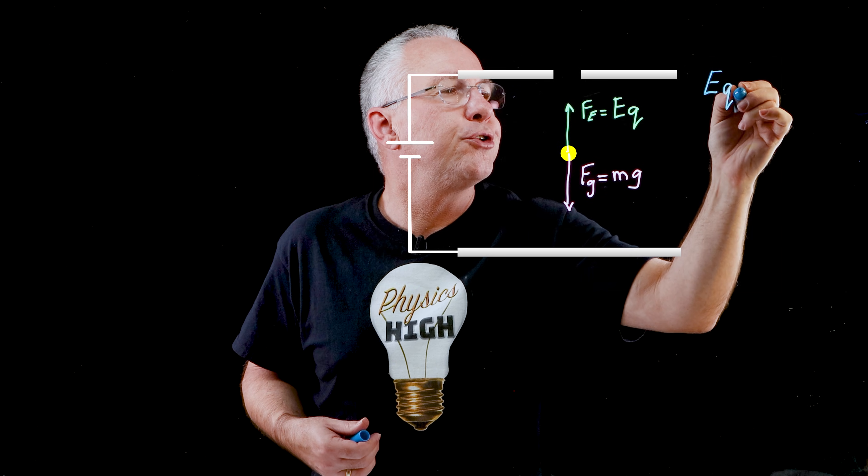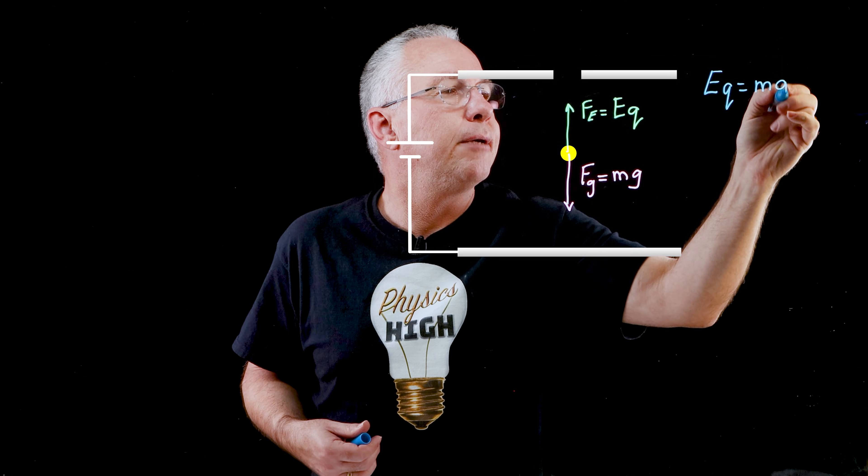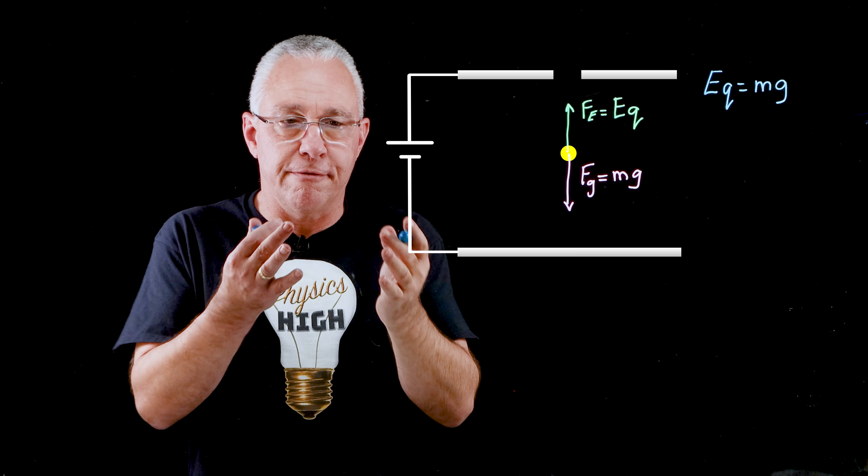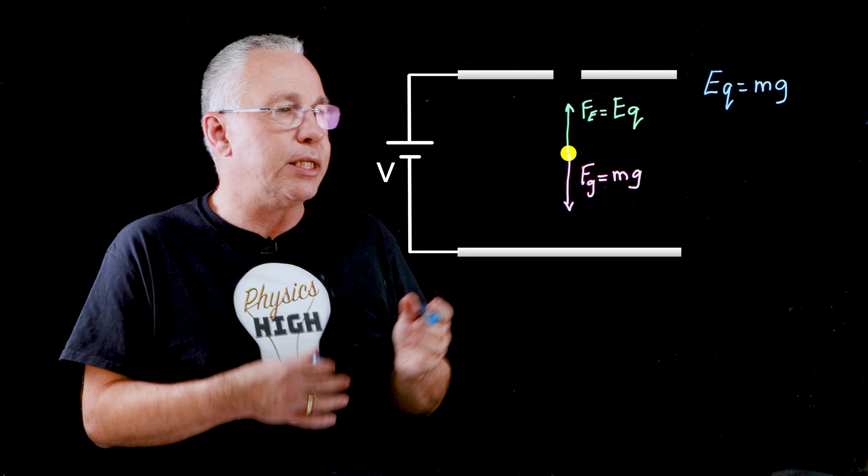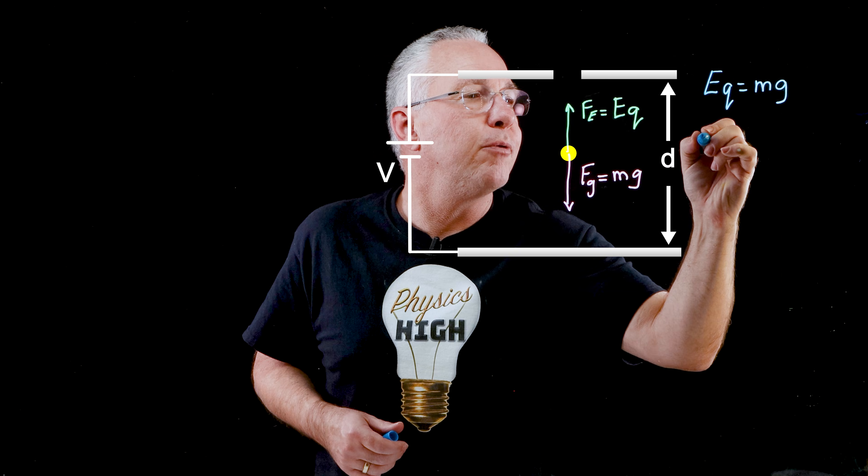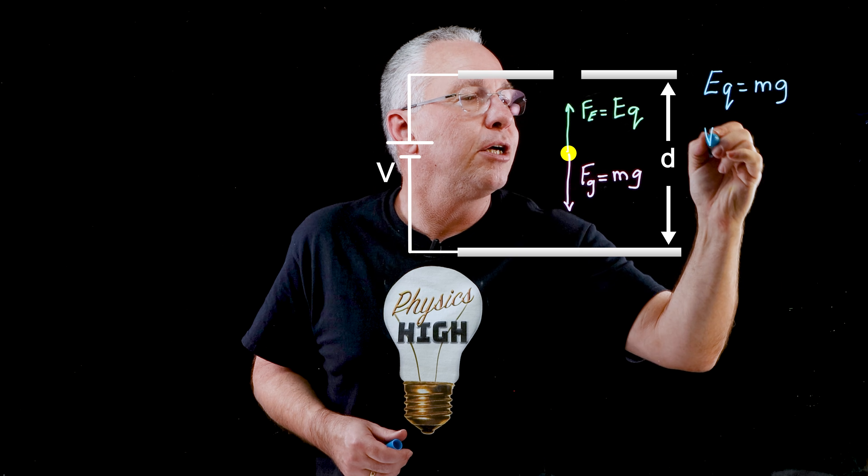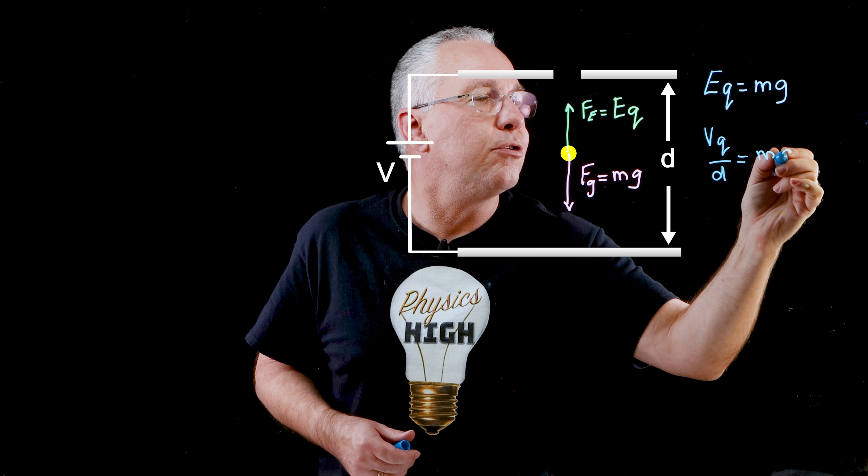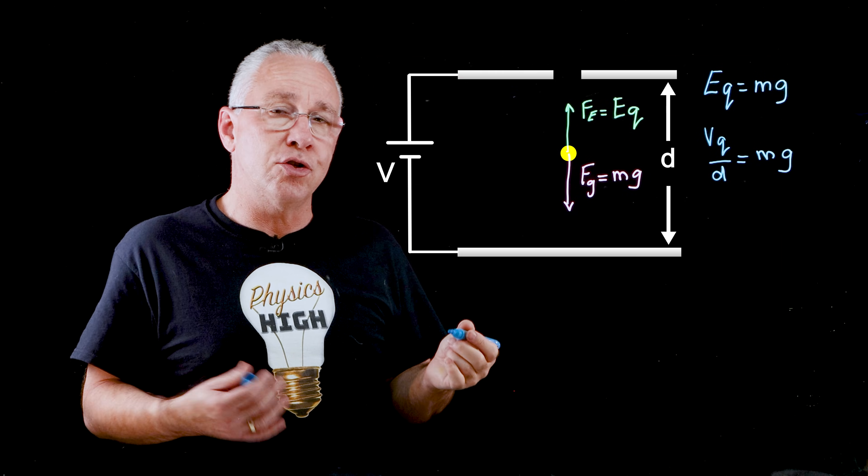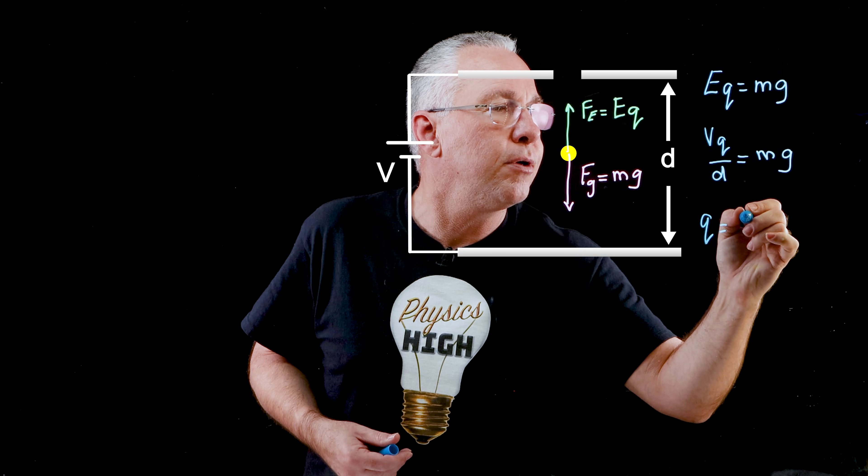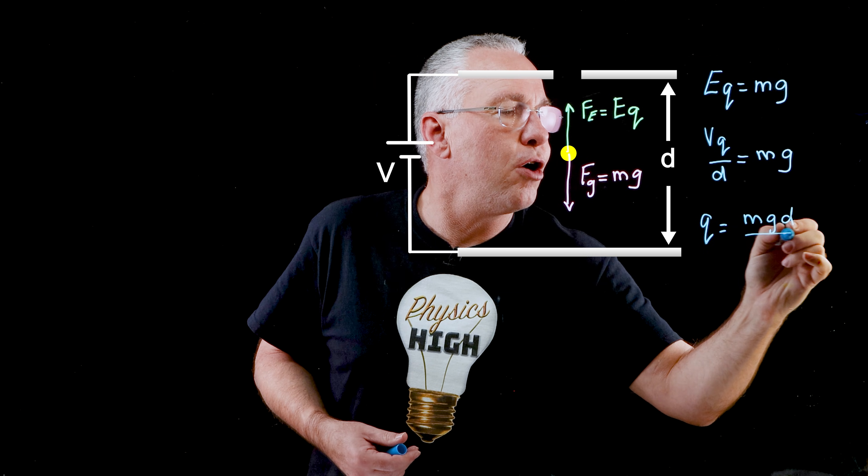EQ is equal to Mg. Now how is E determined? Well E is determined by the voltage that is applied between these two plates and the distance between those two plates. And so we'll replace the E with V over D. VQ over D is equal to Mg. We need to rearrange this to determine the charge. And so the charge is equal to Mgd over voltage.